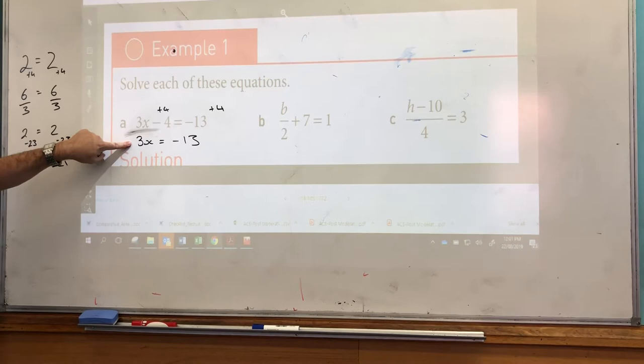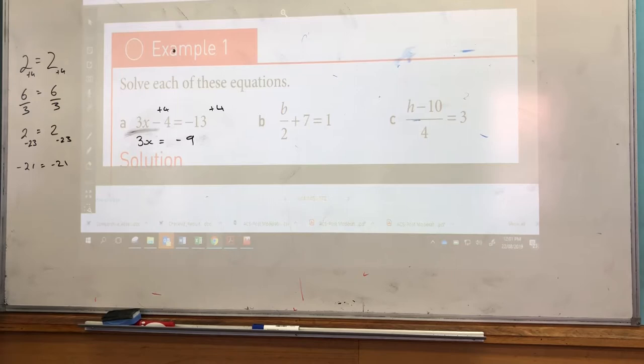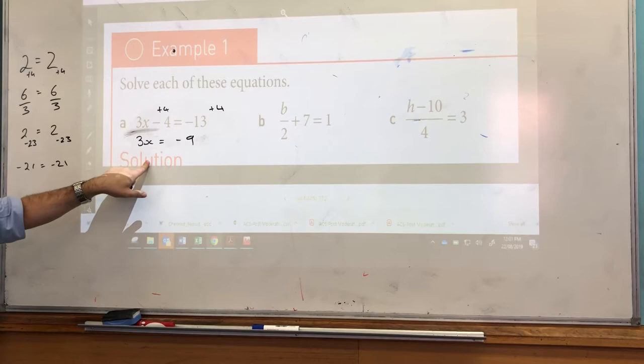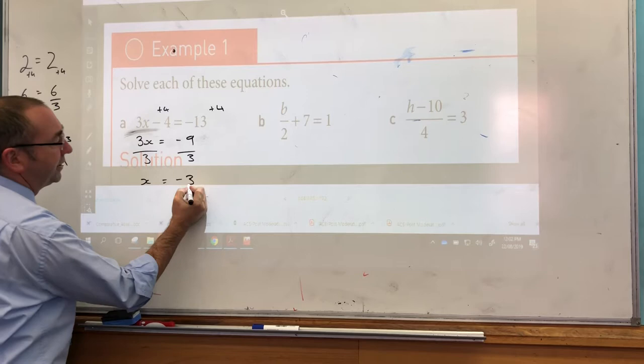Now, we've got 3x's on the left-hand side, and we don't want 3x's, we want 1x. So we've got 3 of something, and we want to make it... We've got to add the 4. Minus 9. Yeah, good, thank you. Now, if I've got 3 of something, and I only want 1 of something, I'm going to divide it by 3. So if we divide both sides by 3, we get x equals minus 3, being the answer for that.